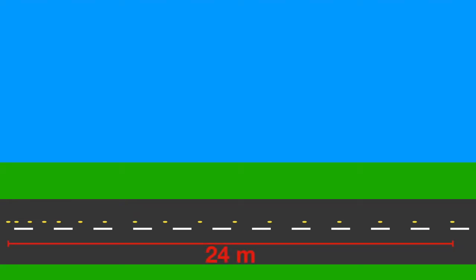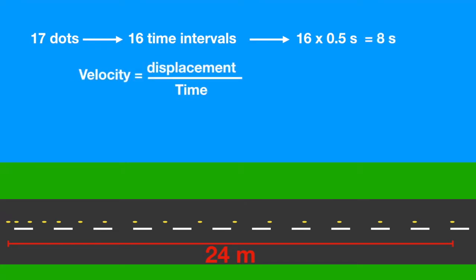If we measure the total distance that he's traveled, which is from his first to his last dot, we can say there are 17 dots, and that means there's an interval between all of those, and there's 16 of them. If we know exactly how long each drip takes—let's say 0.5 seconds—we can say it's 16 times 0.5 seconds, so it took a total of 8 seconds. Using our formula, he did 24 meters in 8 seconds, giving us 3 meters per second on average.